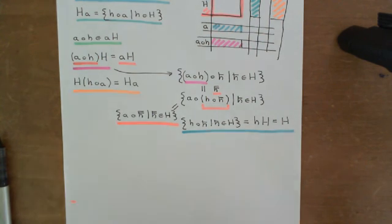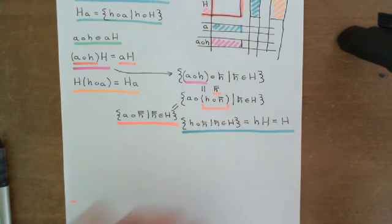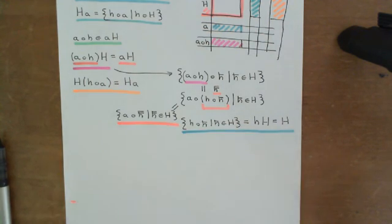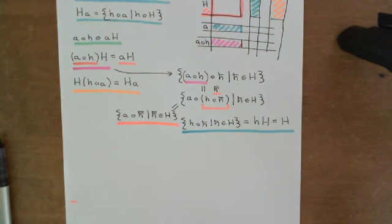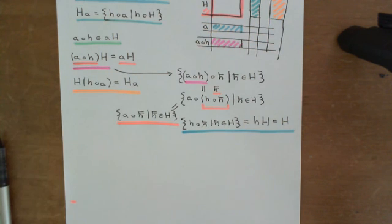So what you can imagine doing is replacing this with a little h-double-bar, rewriting the expression as little a composed with little h-double-bar where little h-double-bar varies over all elements of capital H. Why? Because when you vary little h-bar over all elements of capital H, little h-double-bar — which is little h composed with little h-bar — will also end up varying over all elements of capital H, covering them all. So it doesn't actually matter that you are left multiplying by little h. Yes, it changes the order in which you go through elements, but you still end up going through every single element of the subgroup. And that's why the set you end up generating is exactly the same.